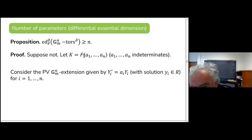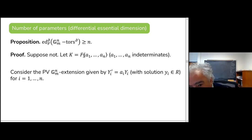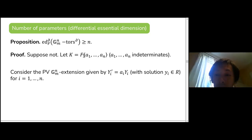An audience member asks for clarification: the ED_δ(F) notation was for a given individual object, but now we're talking about a family of objects. The speaker confirms: the ED of the family of objects is the maximum ED of each individual object, as defined for the functor F.